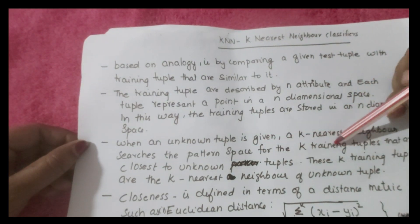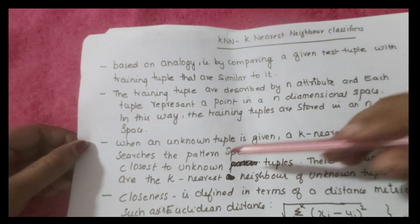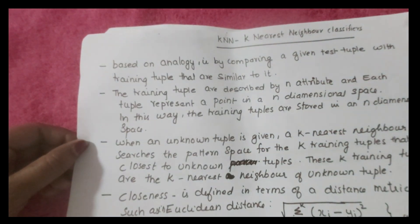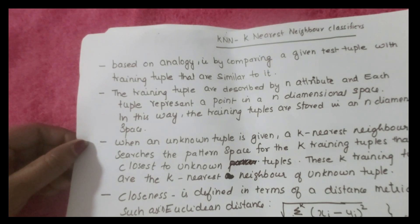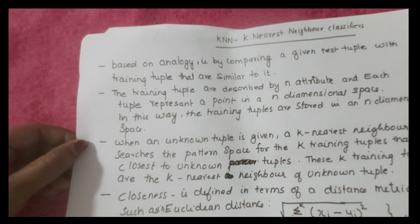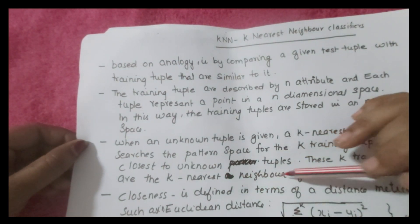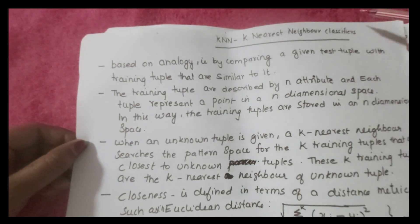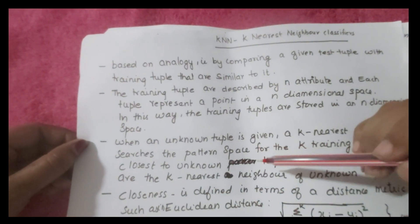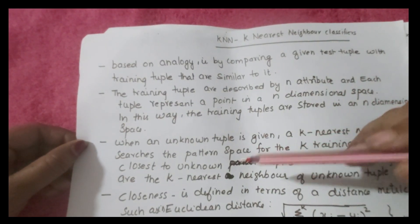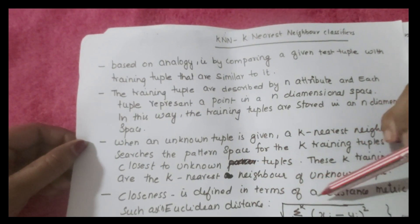It searches for the k training tuples that are closest to the unknown tuple, searching for similar patterns close to the unknown test tuple. These k training tuples are the k nearest neighbors of the unknown tuple. Closeness is defined in terms of distance metrics.